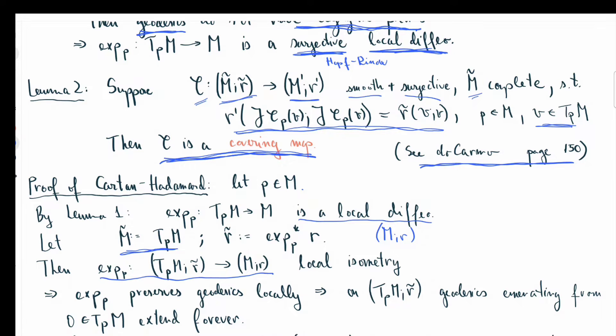Local isometries preserve geodesics locally. And we also know that exp_p, the exponential map, by definition, sends Euclidean geodesic rays from the origin of the tangent space to geodesics of M. So these two facts together—preserving local geodesics and sending rays to geodesics of M—means that in T_p M with r-tilda, geodesics emanating from zero have to extend forever.